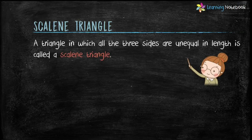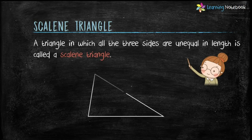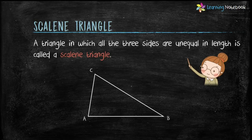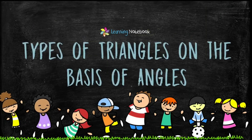A triangle in which all the three sides are unequal in length is called a scalene triangle. Here triangle ABC is a scalene triangle because all the three sides are of different length. Now let's see types of triangles on the basis of angles.